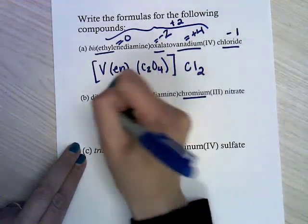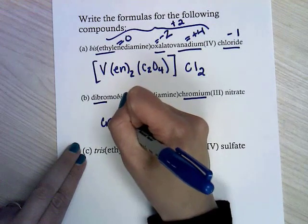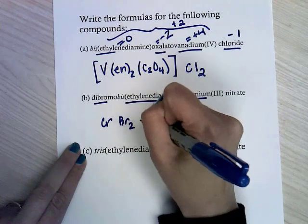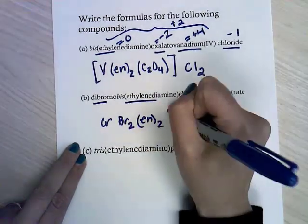This time chromium, dibromo, so Br2. Two ethylenediamines again. All that's in the brackets.